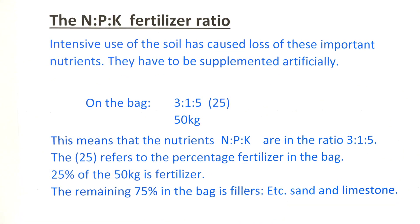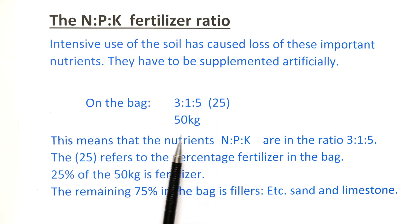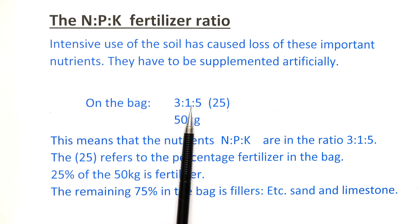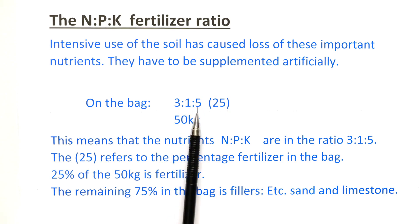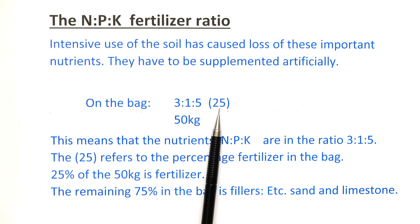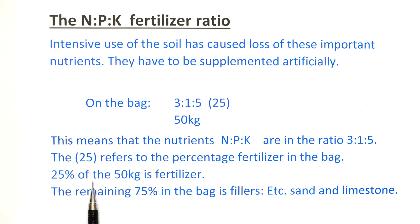The soil has been depleted of these mineral nutrients, therefore they have to be replaced or supplemented artificially. When a bag of fertilizer is bought, you will see a ratio on the bag, a number in brackets, and the actual mass of the bag. The ratio is in the order nitrogen, phosphorus, potassium — NPK. So 3 of 9 parts is your nitrogen, 1 of 9 parts is phosphorus, and 5 of 9 parts is potassium. The 25 in brackets means that 25% of your 50 kg bag is fertilizer. The remaining 75% in the bag is fillers, for example sand and limestone.